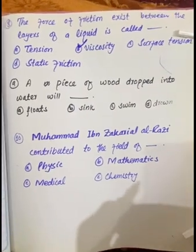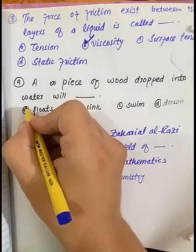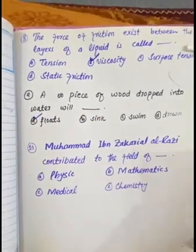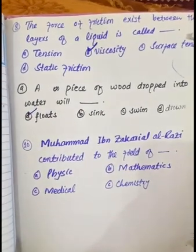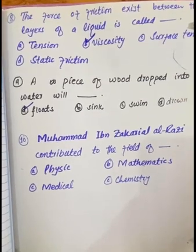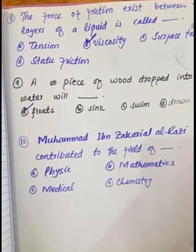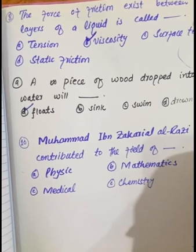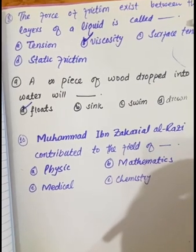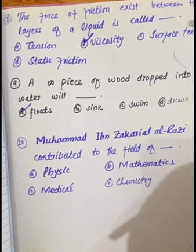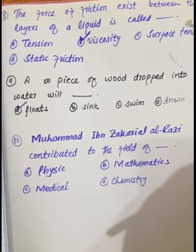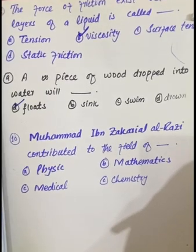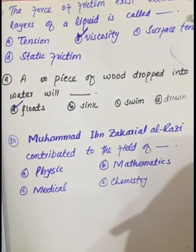MCQ number 9: a piece of wood dropped into water will — float, sink, swim, or drown. The correct option is float, because the density of wood is less than the density of water. Any substance with less density than water will float on the surface.